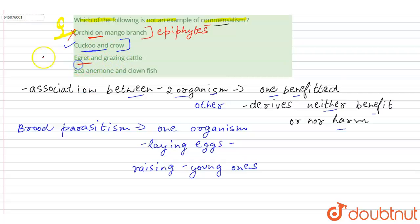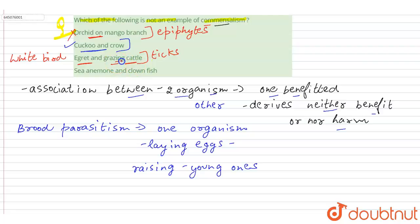The next option is egret and grazing cattle. The egret is a kind of white bird that depends on grazing cattle and is benefited from it, as it eats the ticks that lie on the grazing cattle. This is an example of commensalism.